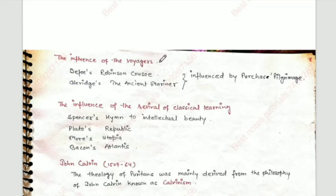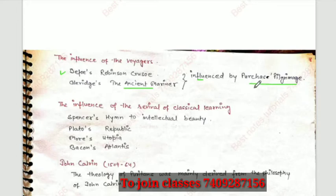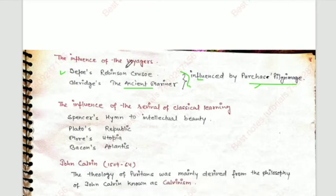The influence of Voyagers: we see their influence on certain works. Robinson Crusoe by Defoe and The Rime of the Ancient Mariner by Coleridge were influenced by Purchas's Pilgrimage. That is the work that influenced them. A common exam question asks which works were influenced by voyagers during the Renaissance period.